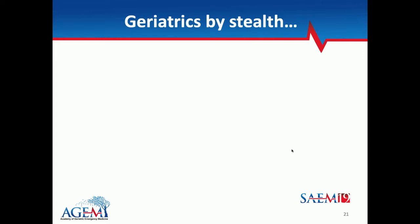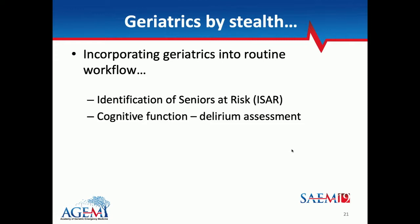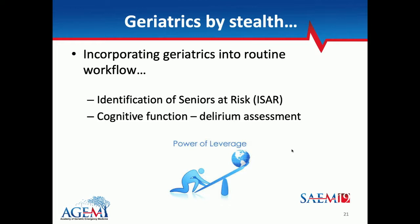A phrase that many of us use is 'geriatrics by stealth' — what can we do to make this part of our routine workflow? How do we incorporate geriatric measures into care? I'm going to give specific examples around the ISAR — the Identification of Seniors at Risk — a screening tool that has not been shown to have great accuracy or predictive ability for adverse outcomes in older patients, but has been increasingly adopted by many emergency departments focusing on geriatric care. I'll also talk about cognitive function and more specifically delirium assessment.